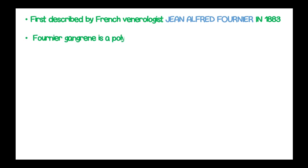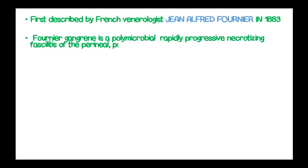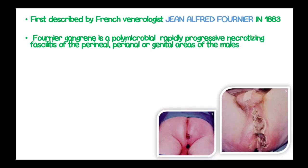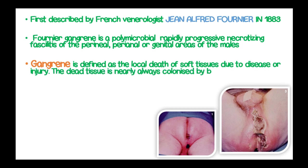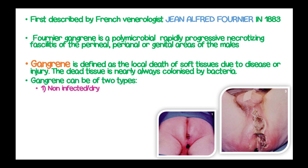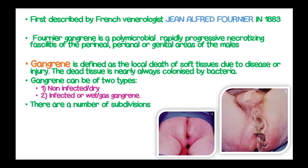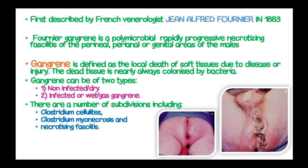Fournier's gangrene was first described by Jean-Alfred Fournier. It is defined as a polymicrobial, rapidly progressing necrotizing fasciitis of the perineal, perianal, and genital areas of males. Gangrene is a local death of soft tissues due to disease or injury, and this dead tissue is always colonized by bacteria. Fournier's gangrene is one of the subdivisions of gangrene known as necrotizing fasciitis of the male genitalia.